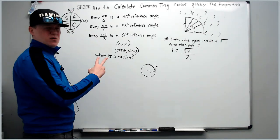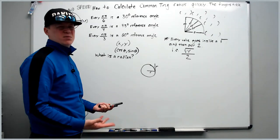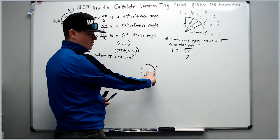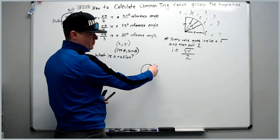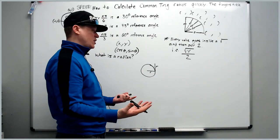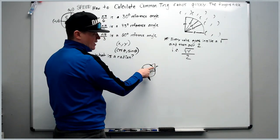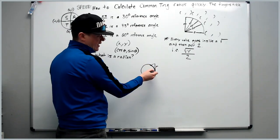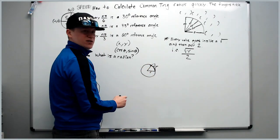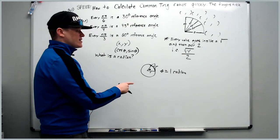First, we'll start with the basics: what is a radian? Many students can't answer this even after covering pre-calculus. A radian is — imagine you have a circle with radius r, and you make another distance of r going straight up tangent to the first r. Now imagine that radius as a wet noodle or piece of string. Push it over so it lies along the circle with no air gaps, creating an arc length of one radius.